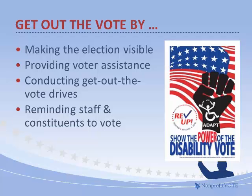During a voter registration or get-out-the-vote campaign, it's important for a charity to instruct its employees and volunteers to avoid saying, doing, or writing anything that could be indicative of a partisan purpose. The executive staff may be very clear on these rules, especially after a webinar such as this, but the volunteers and employees actually on the ground may not be as clear. Many people may have a strong opinion about the election, but if they're out there doing get-out-the-vote work, they need to keep those partisan instincts out of the process.